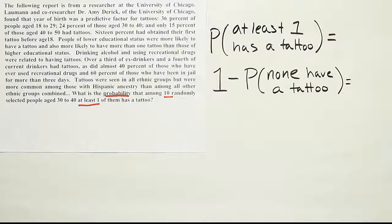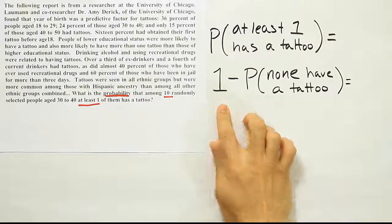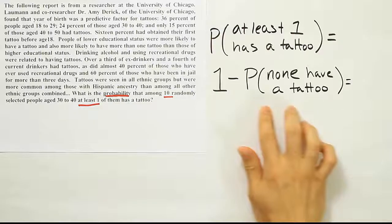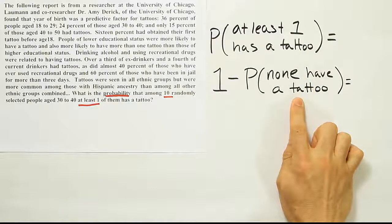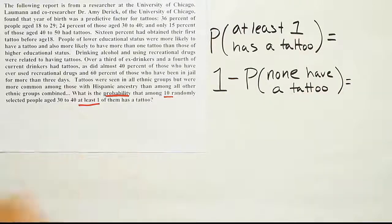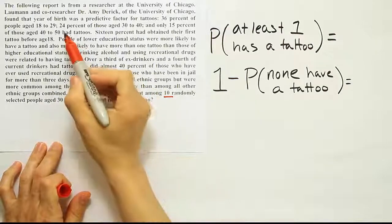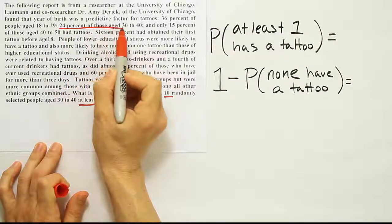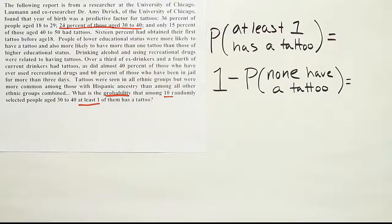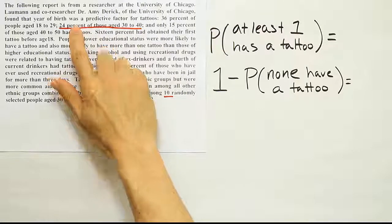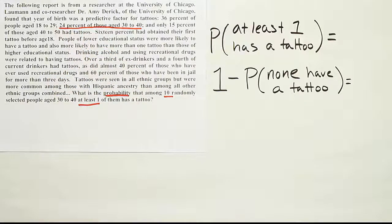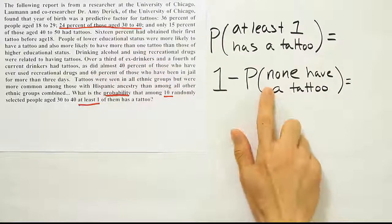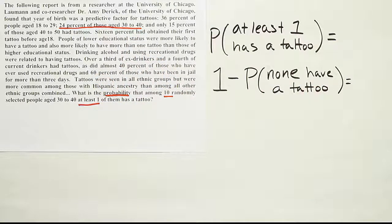Now from there, we have to try to work out this part. That's a constant, so there's nothing to do. We just have to figure out the probability that none of them have tattoos. Well, this is among 10 randomly selected people in the 30 to 40 age bracket. So 30 to 40 was this category here. It tells me that 24% of those in the 30 to 40 age bracket have tattoos. So we know the probability that an individual has a tattoo in that age category. We're looking for the probability that none of them have a tattoo, and there's 10 subjects that we're going to be taking.